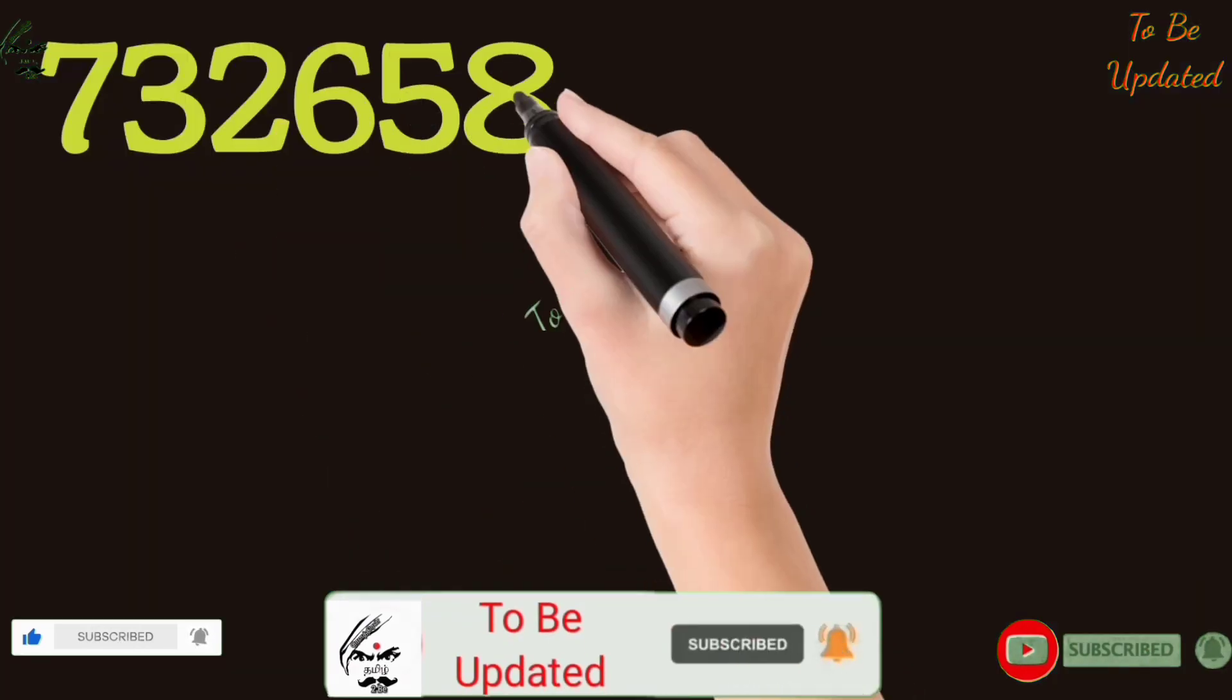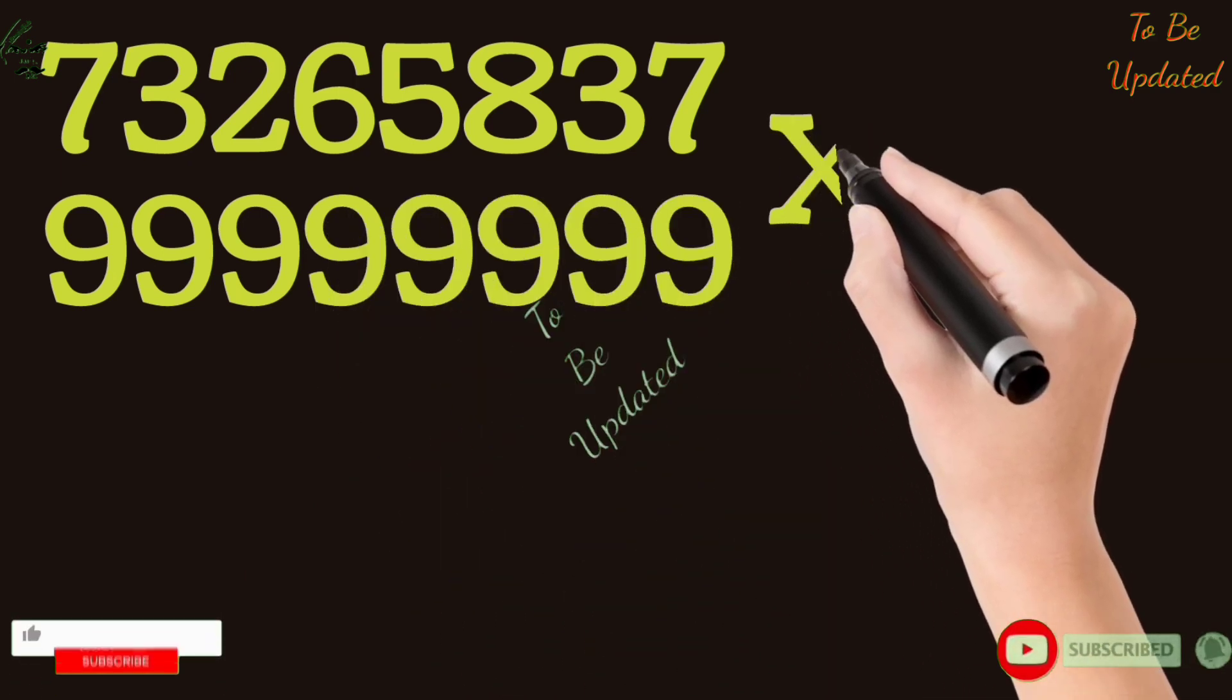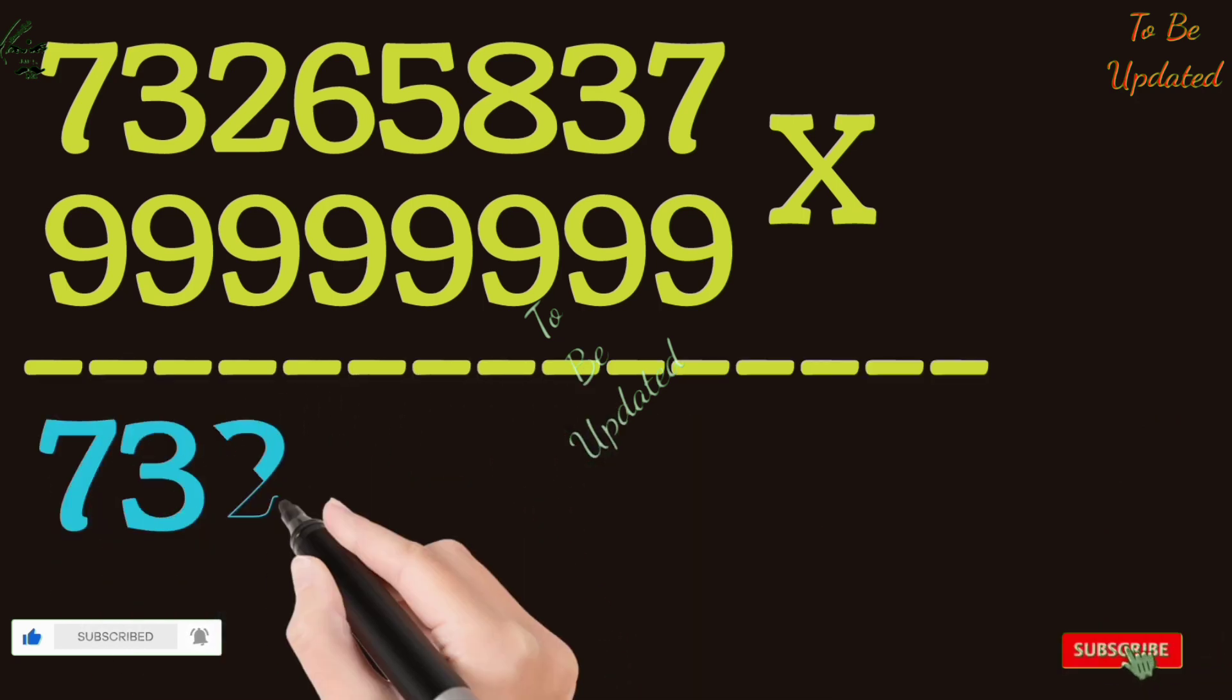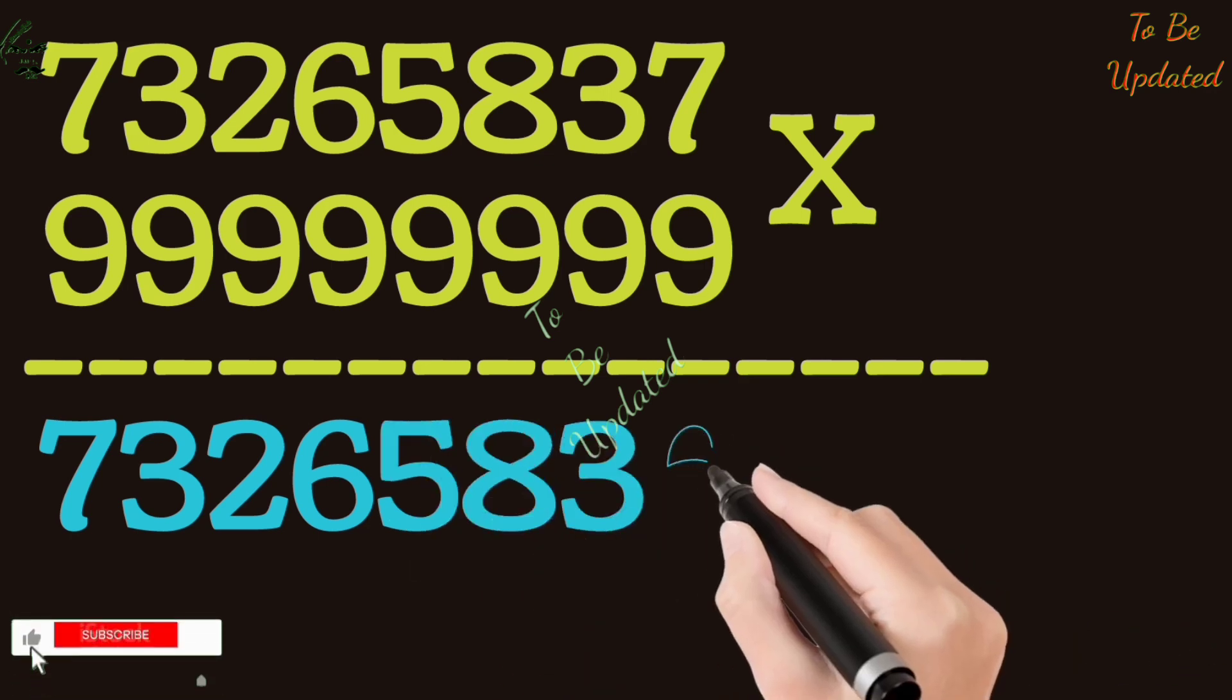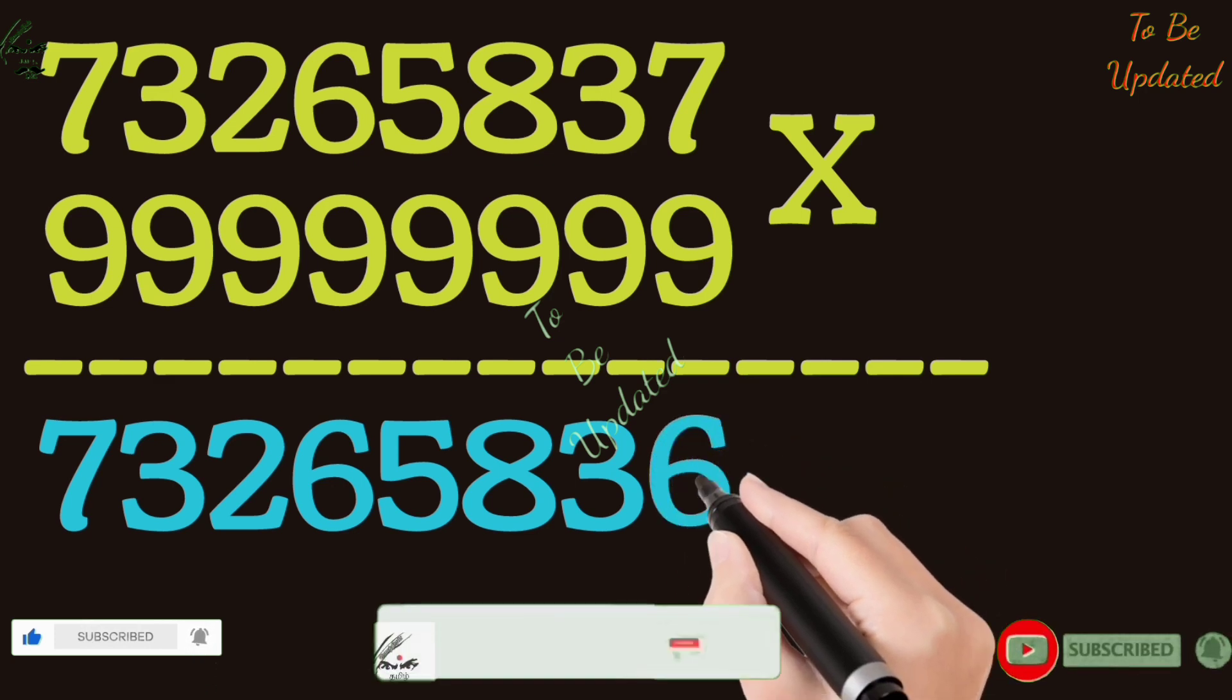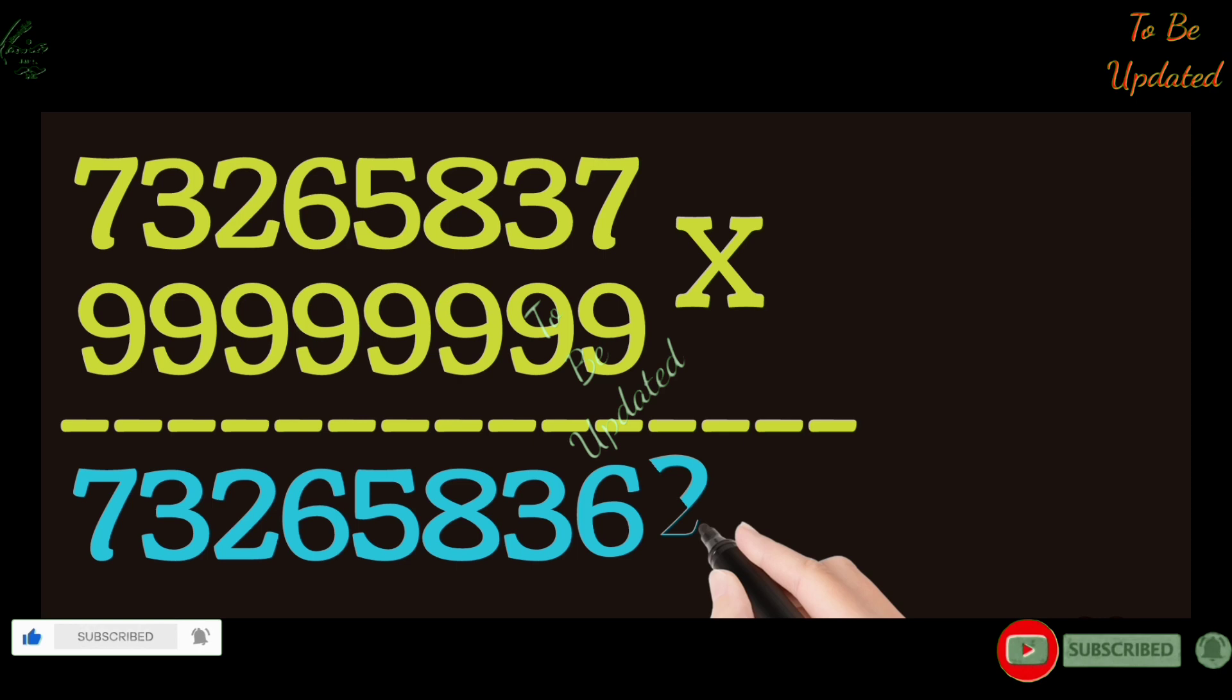73265837 multiplied with 99999999. Write the first 7 numbers as it is: 7326583. And the last number must be subtracted by 1. 7 minus 1, we get 6. Write that 6. And then subtract each number from 9. 7 is subtracted from 9, we get 2. 3 is subtracted from 9, we get 6.